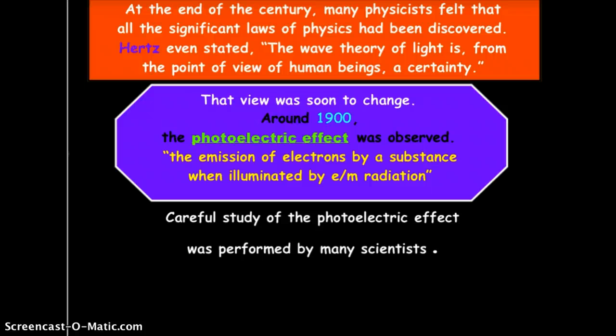So, at the end of the century, the two physicists had come to the idea that the wave theory of light comes from the idea that we're still very uncertain about what light is. That view was to change around 1900 when we gained the understanding of the photoelectric effect, which is that the emission of electrons by a substance when illuminated by electromagnetic radiation could take place.